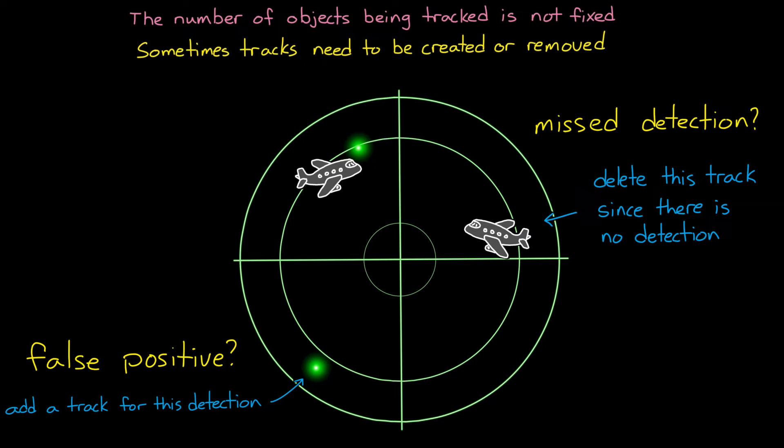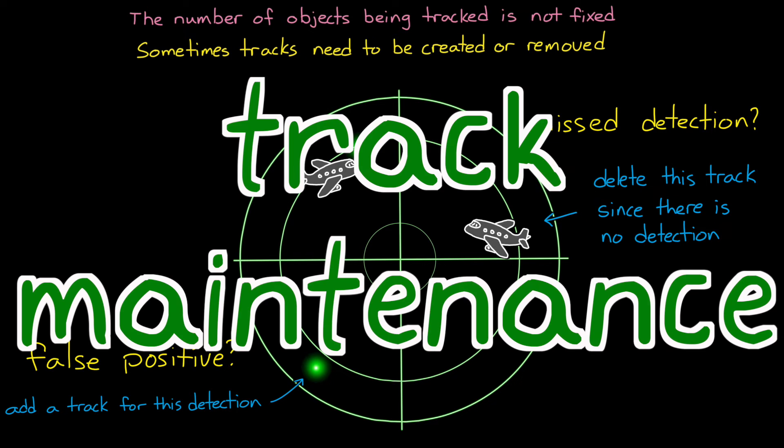So we need to be careful here so that we aren't creating tracks prematurely, which clutters our view of what's actually there. And we aren't deleting tracks prematurely, which decreases the effectiveness of tracking in the first place. This is the track maintenance problem.